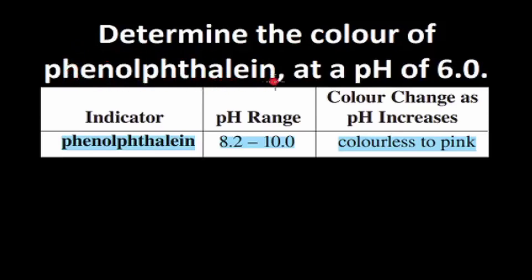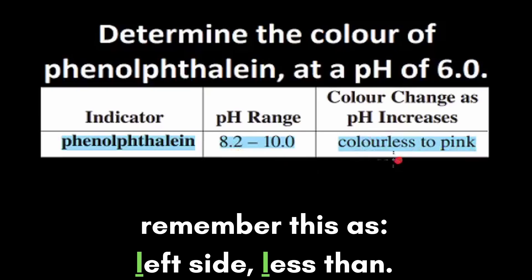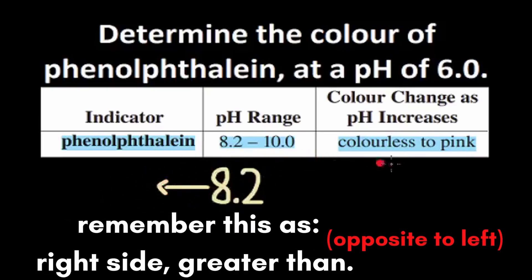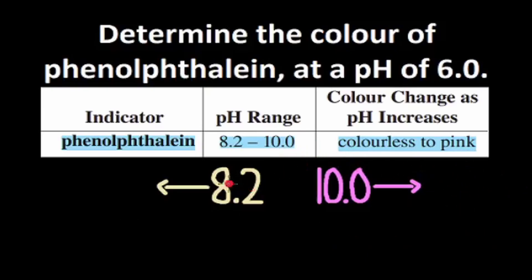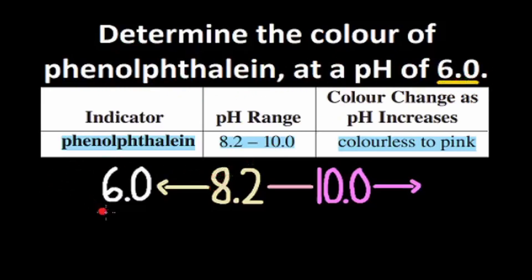Let's attempt this one. Determine the color of phenolphthalein at a pH of 6.0. This is the information we have. The pH range is 8.2 to 10.0 and the color change as pH increases is colorless to pink. 8.2 and colorless are both on the left side, so all pHs less than 8.2 will be colorless. 10.0 and pink are both on the right side, so all pHs greater than 10.0 will be pink. In between 8.2 and 10.0, we have a light pinkish color. The problem wants us to determine the color of phenolphthalein at a pH of 6.0. 6.0 is less than 8.2, so the color of phenolphthalein will be colorless.